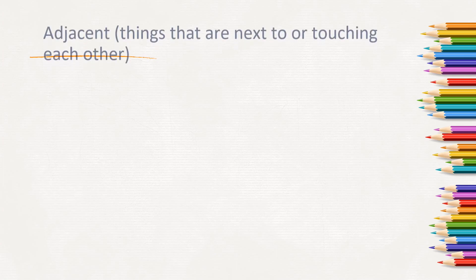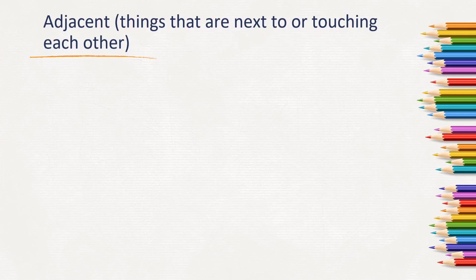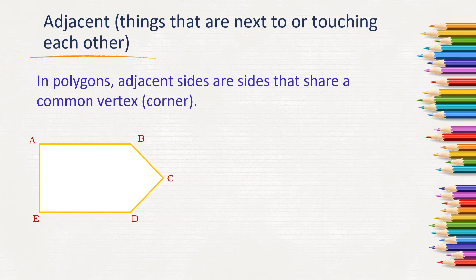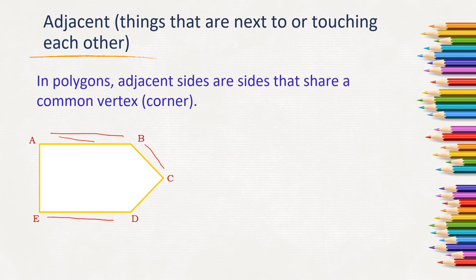Adjacent means things that are next to each other or touching each other. In polygons, adjacent sides are sides that share a common vertex, that is, a corner. In the figure, line segment AB is adjacent to BC. AB cannot be adjacent to ED because they are not touching or next to each other. When two sides meet at a common point, only then are they called adjacent sides.